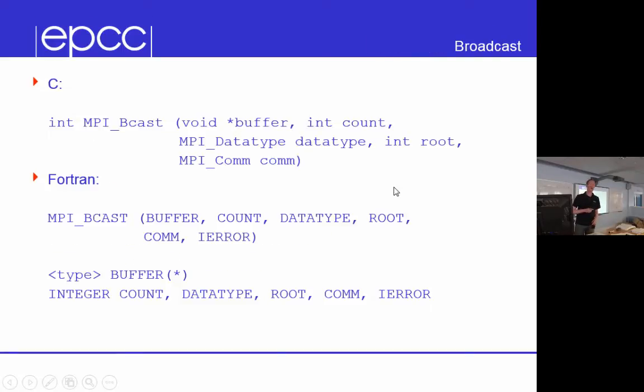The next collective communication is a broadcast. And this is where a single process, the root, will broadcast a value or values to every other process in the communicator. So the root in this buffer passes in its data, number of elements, count and of a certain type, and then it will broadcast these to every other process. So for instance, if we pass in a count of one, data type of int, it will send this single element to every other process, which finds it in the buffer. If count was two, data type of int, sends two integers to every other process.